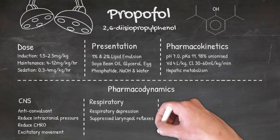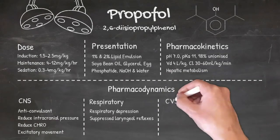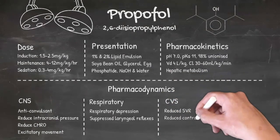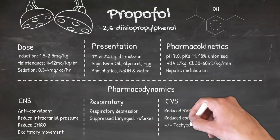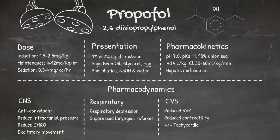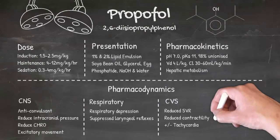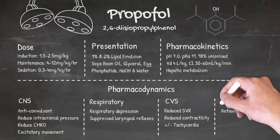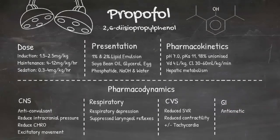Through a mechanism involving nitric oxide, propofol causes vasodilatation and therefore reduced systemic vascular resistance. It also reduces myocardial contractility, which may or may not be compensated for by tachycardia. Lastly, propofol does have antiemetic properties. That's an overview of propofol — now let's move on to see how other induction agents differ.